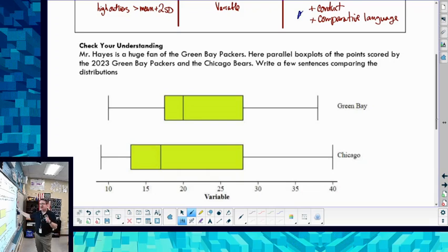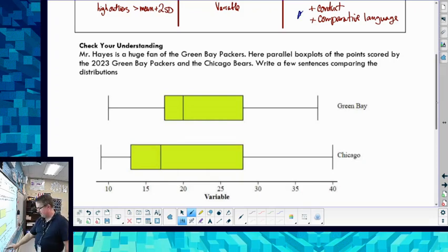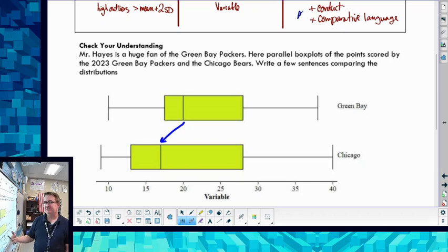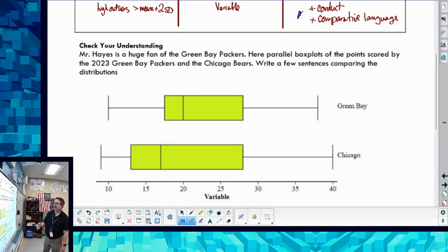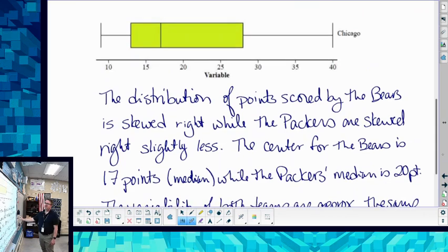All right, welcome back. So this is what I wrote. Now if you look at this, notice the ranges are about the same. The center obviously of the Packers is much higher than the Bears. So the very top of my head, the variability is about the same. The centers, the Packers have been scoring more, the center is higher average, higher mean score, however you want to do that.